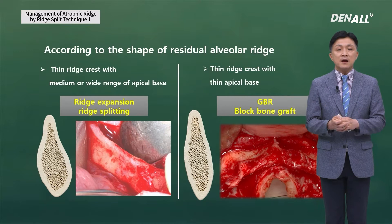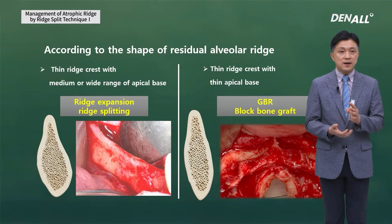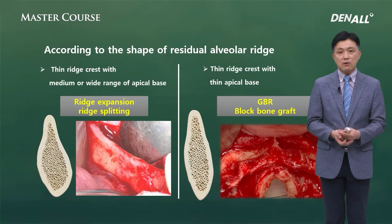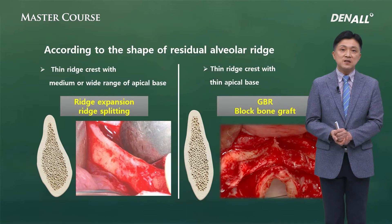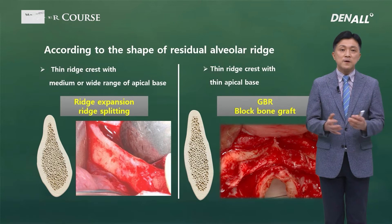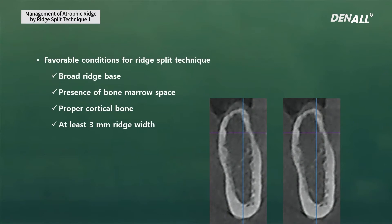The ridge crest can be very thin but have a medium or wide apical base — in this case, you can do ridge expansion or split. If there is a thin crest with a thin apical base, you should do GBR or block bone graft instead of ridge split to get more bone.